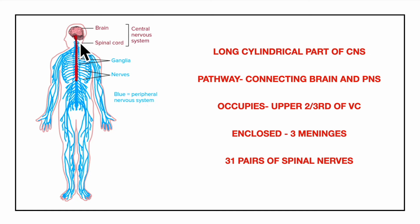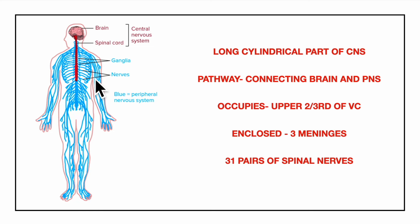In this video, we will be learning about the spinal cord in detail. The spinal cord, shown in red here, is a long cylindrical lower part of the central nervous system. It is the main pathway for information connecting the brain and the peripheral nervous system. It occupies the upper two-thirds of the vertebral canal and is enclosed in three meninges. It gives rise to 31 pairs of spinal nerves.